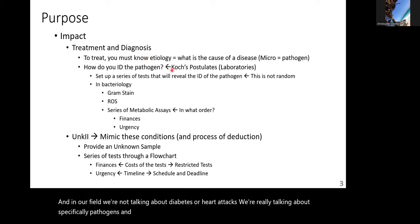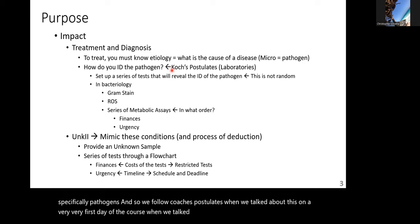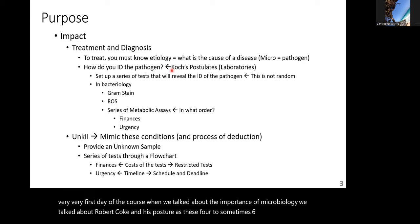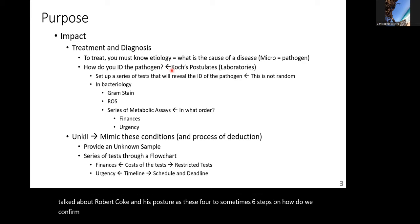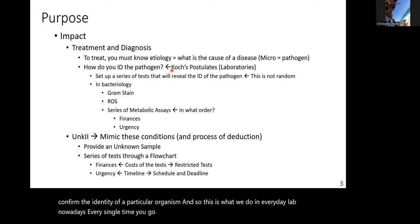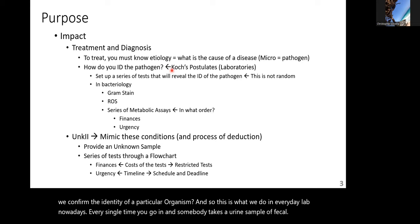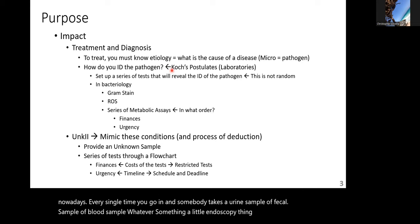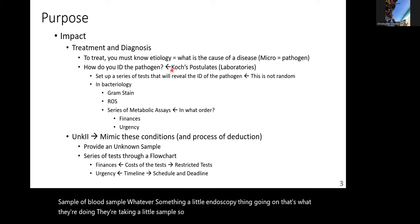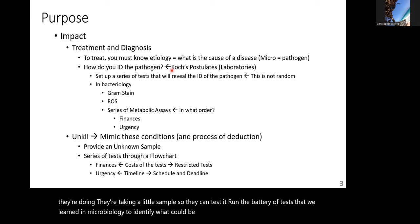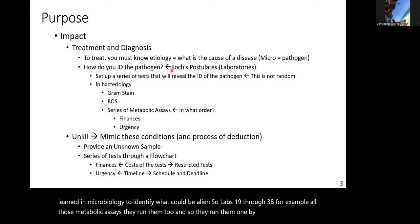We follow Koch's postulates — the four to sometimes six steps for confirming the identity of a particular organism — and we discuss etiology, which refers to the cause of a disease. In our field, we're talking specifically about pathogens. This is what's done in everyday labs: every time someone takes a urine sample, fecal sample, or blood sample, they run a battery of tests — like labs 19 through 38 with all those metabolic assays — to identify what could be ailing you.